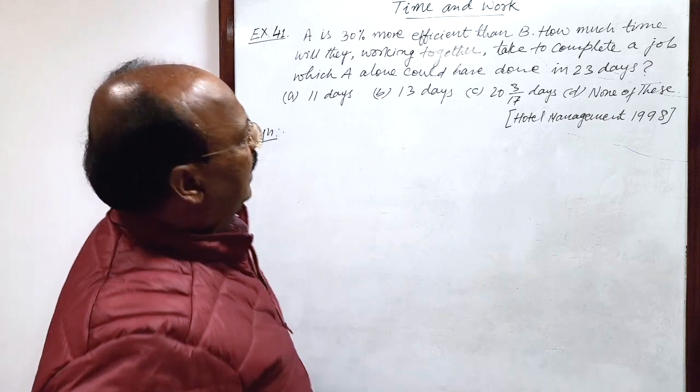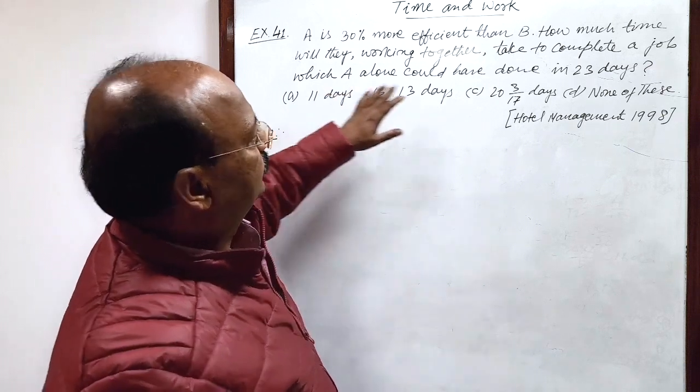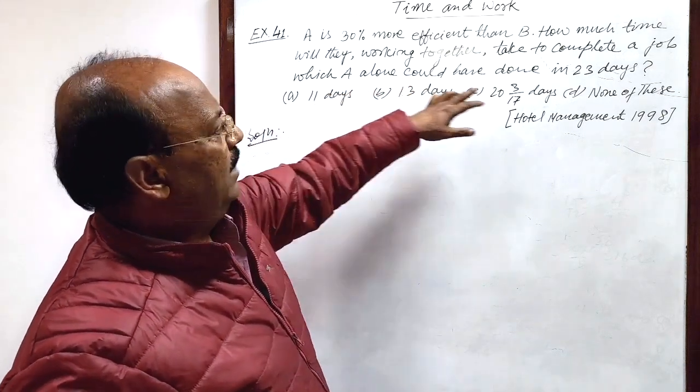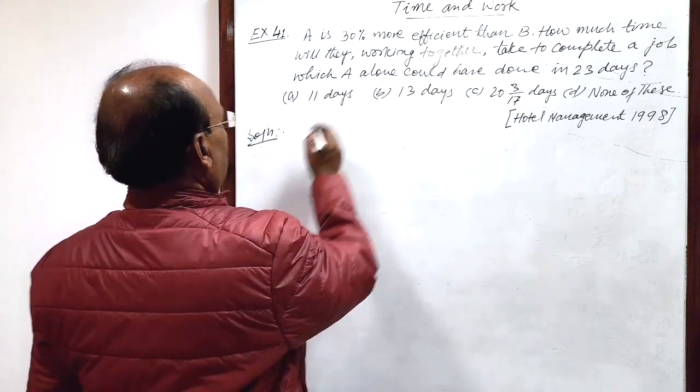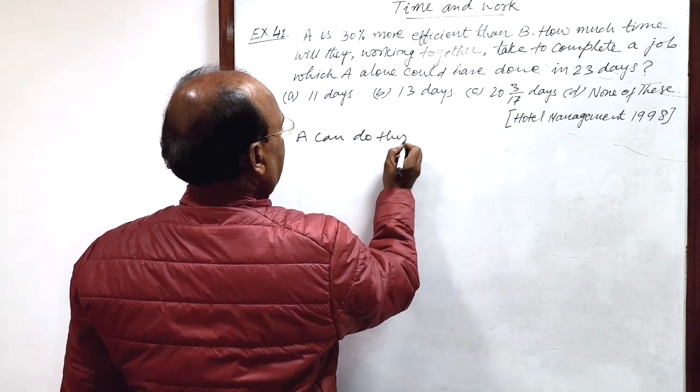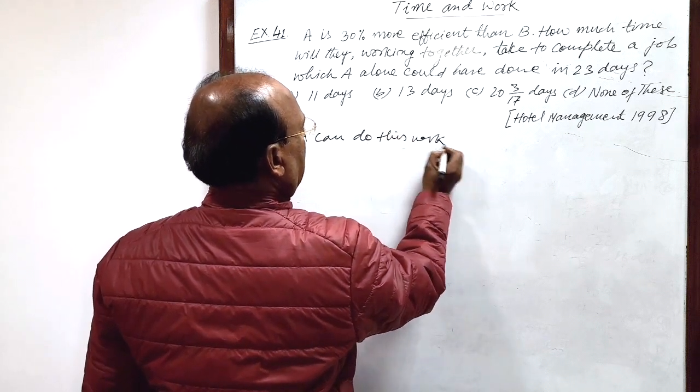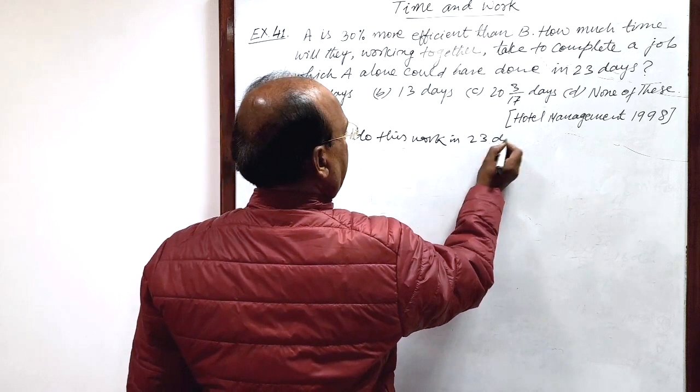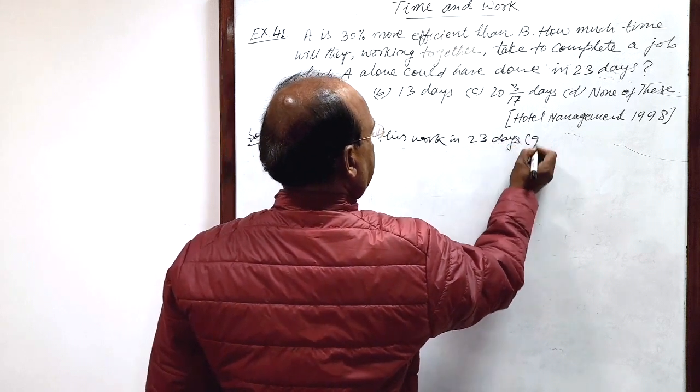Here given that A alone could have done in 23 days. A can do this work in 23 days. This is given.